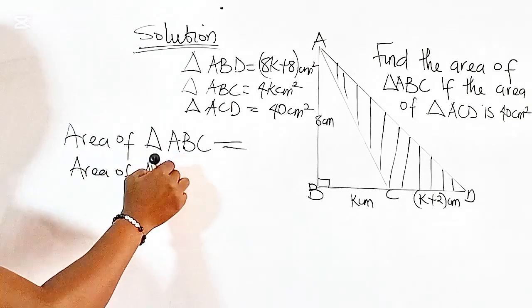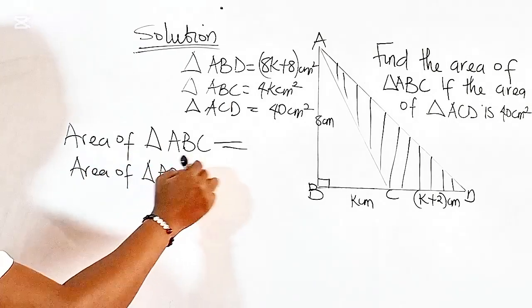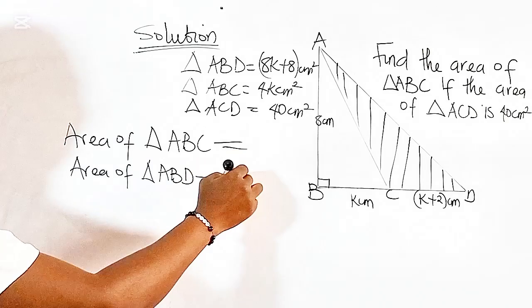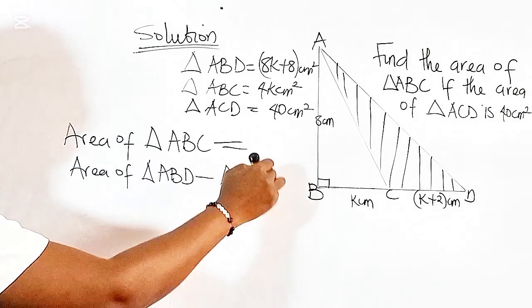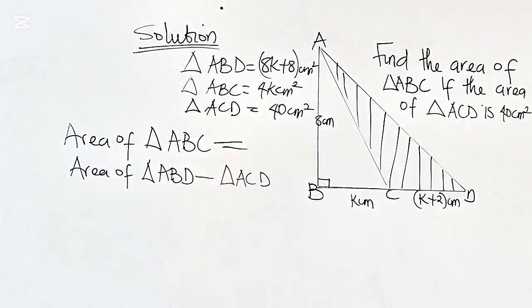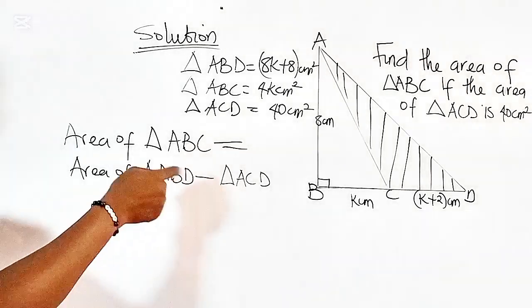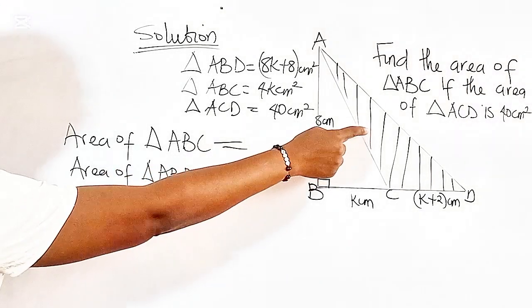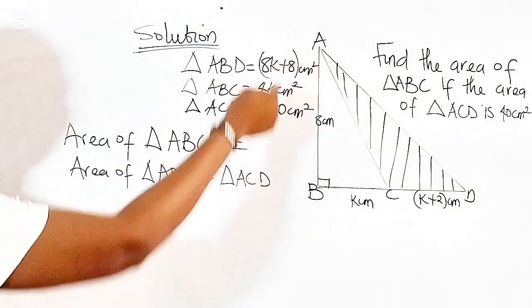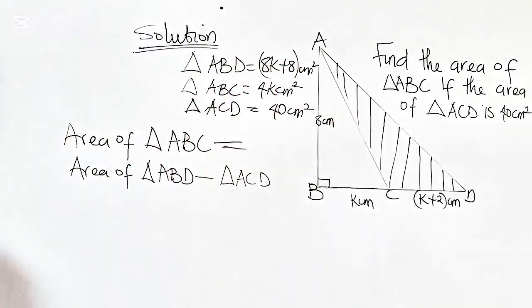minus the area of triangle ACD. I hope you understand what I have done here. We are subtracting the value of this shaded region from the value of the bigger portion.